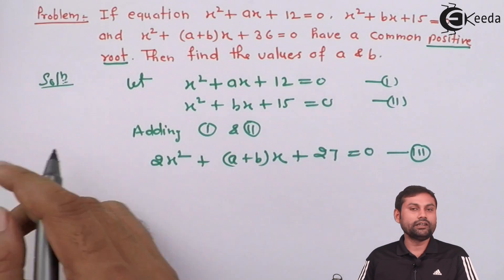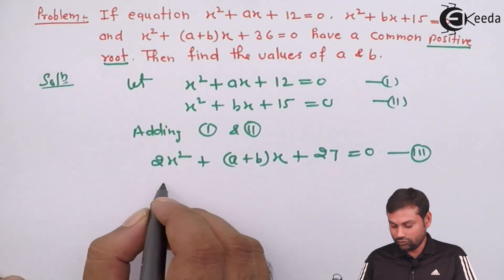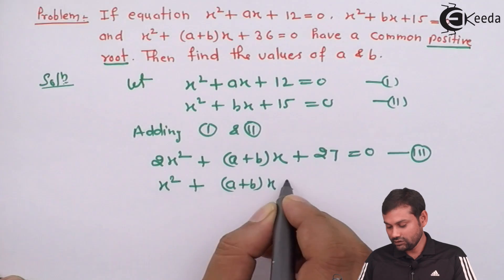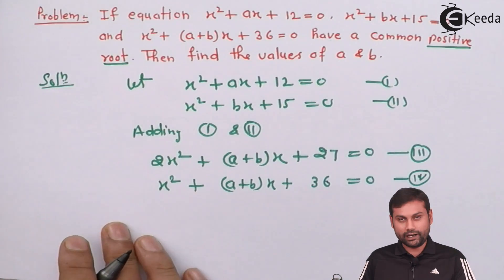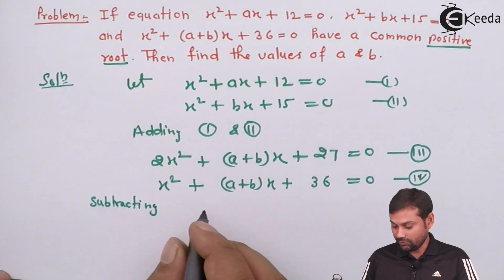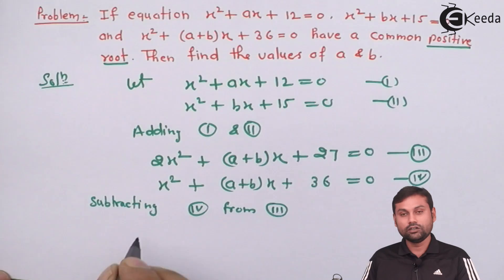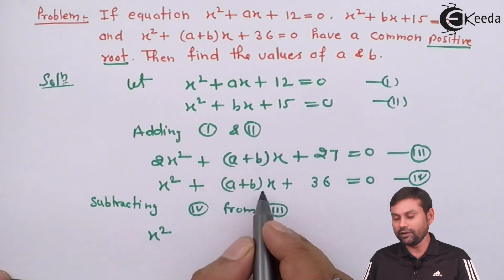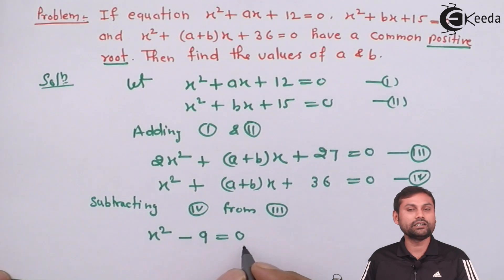Now we have one quadratic equation already given: x² + (a+b)x + 36 = 0. Say this is the fourth quadratic equation. Now I am going to subtract these two. Subtracting equation 4 from equation 3: 2x² minus x² gives x², (a+b)x minus (a+b)x gives 0, and 27 minus 36 is -9. So we get x² - 9 = 0.